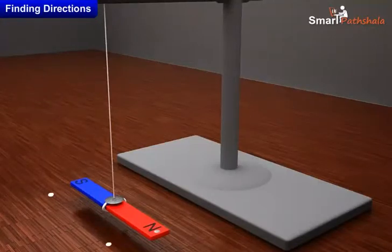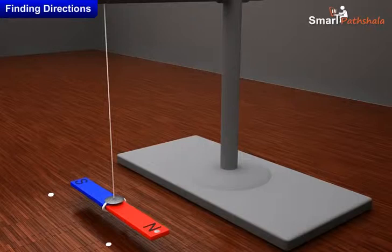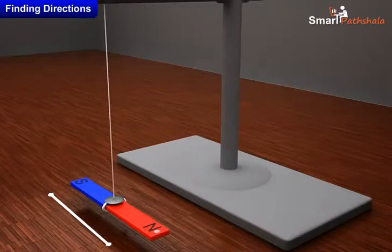Mark two points on the ground to show the position of the ends of the magnet when it comes to rest. Draw a line joining the two points. This line shows the direction in which the magnet was pointing in its position of rest.